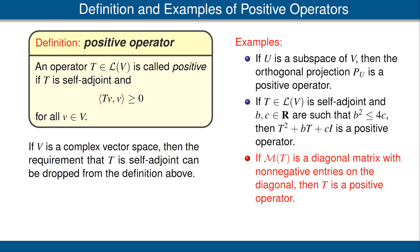For our third example of positive operators, suppose we have an orthonormal basis of our vector space V, and the matrix M(T) of T is a diagonal matrix with respect to that orthonormal basis, with all entries on the diagonal being non-negative numbers. Then T is a positive operator. Please stop the video and verify this for yourself — do keep in mind this is the matrix with respect to an orthonormal basis.